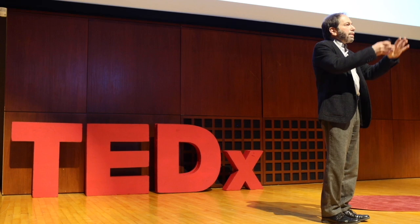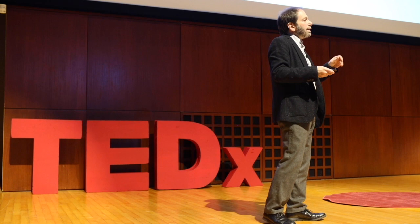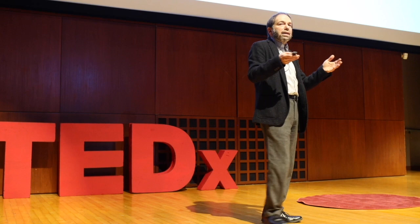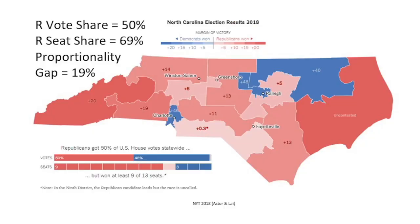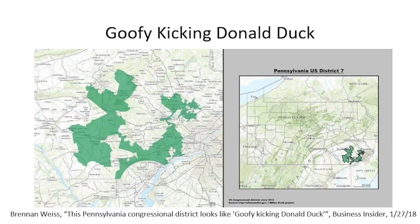As we think about drawing a map for a state, we want a notion of what makes a map fair. One way to think about this is the proportionality gap. We can use historical data to estimate what fraction of the overall population we expect to vote for each party. In North Carolina, the Republican vote share is about 50%, but for this map the Republican seat share is 69% — nine of 13 seats. That gives a proportionality gap of 19%, which is really huge. Our goal is to make this proportionality gap as small as possible.